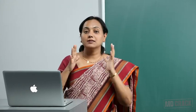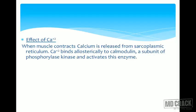When the muscle contracts, it requires calcium. Calcium is released from the sarcoplasmic reticulum and binds allosterically to calmodulin, which is a subunit of phosphorylase kinase. When phosphorylase kinase is activated by calcium-bound calmodulin, it phosphorylates and activates glycogen phosphorylase, leading to glycogen degradation and energy supply to the muscle.